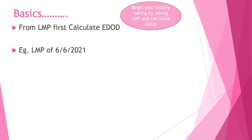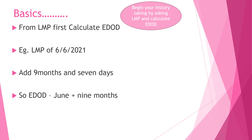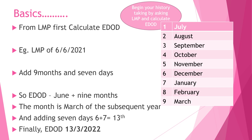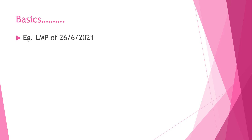The EDOD is calculated by adding 9 months and 7 days to the LMP. Adding 9 months to June gives March of the subsequent year, then adding 7 days: 6 plus 7 equals 13. So the EDOD is the 13th of March 2022.